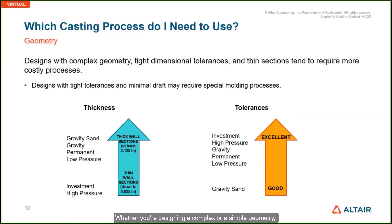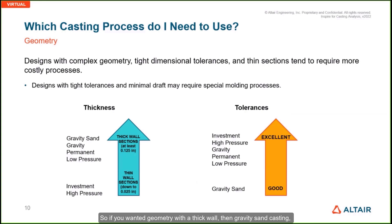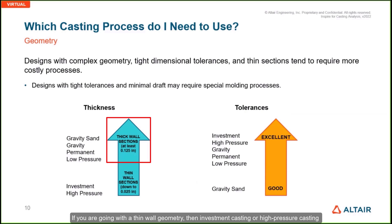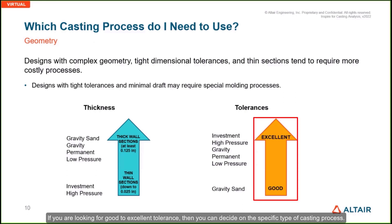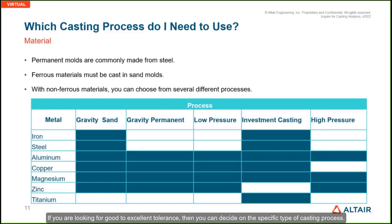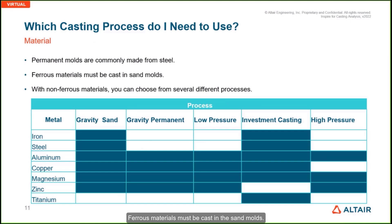Whether you're designing a complex or simple geometry, tolerance and thickness are factors used to define the appropriate process. For thick wall geometry, gravity sand casting, permanent gravity casting, or low-pressure casting methods are more suitable. For thin wall geometry, investment casting or high-pressure casting is recommended. When considering materials, permanent molds are commonly made from steel, ferrous materials must be cast in sand molds, and for non-ferrous materials you can choose from several different casting processes.